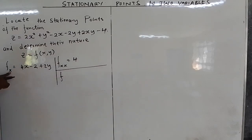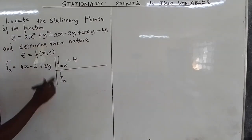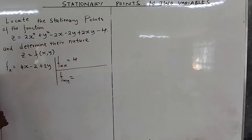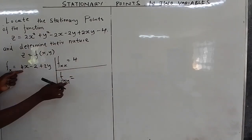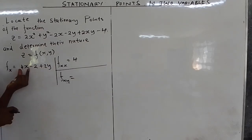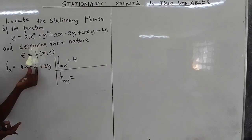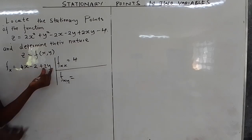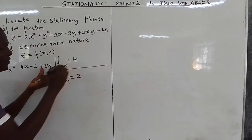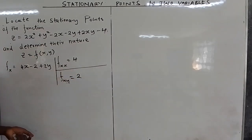The first time we did it partially with respect to x. Now the second time we want to differentiate ∂z/∂x partially with respect to y. Meaning only y is a variable, so x is a constant. The 4x term is a constant giving 0. The constant negative 2 also gives 0. If you differentiate 2y you get 2. So the mixed partial ∂²z/∂x∂y equals 2.